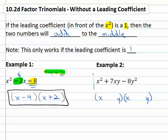But because the leading coefficient is one, we simply are looking for something that multiplies to negative eight and adds to seven. Well, eight is either two times four, but that's not going to add to seven or eight times one.